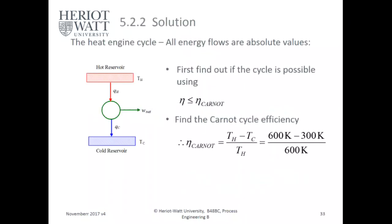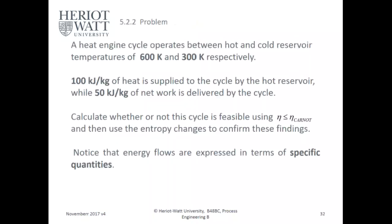Let's go over a heat engine problem. A heat engine cycle operates between a hot reservoir at 600 K and a cold reservoir at 300 K. 100 kJ/kg of heat is supplied by the hot reservoir, while 50 kJ/kg of net work is delivered. Calculate whether the cycle is feasible using: efficiency ≤ Carnot efficiency, then confirm using entropy change. Energy flows are expressed as specific quantities in kJ/kg.